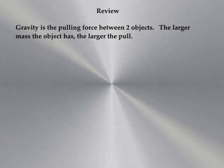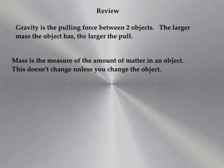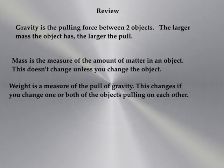So, to review, gravity is the pulling force between two objects. The larger mass the object has, the larger the pull. Mass is the measure of the amount of matter in an object. This doesn't change unless you change the object. Weight is a measure of the pull of gravity. This changes if you change one or both of the objects that are pulling on each other.